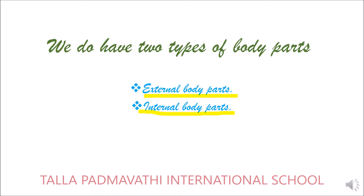The internal body parts include organs like lungs, heart, brain, and stomach — the organs which you cannot see are called internal body parts.